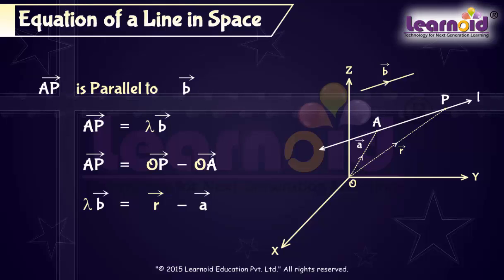Rearranging it, we will get the vector equation of the line as R vector is equal to A vector plus lambda B vector.